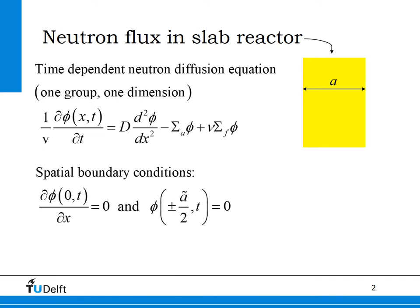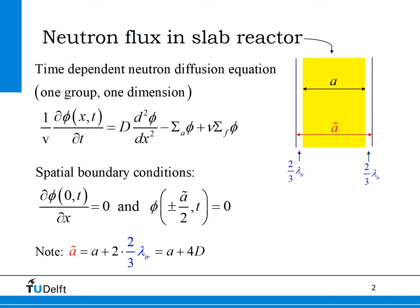To solve this equation we need boundary conditions. For a bare geometry, this is given in diffusion theory by putting the flux to zero at the linearly extrapolated boundary. Furthermore, because the composition is homogeneous, the flux needs to be symmetric around the center plane as well. The width of the slab is A, and the width of the extrapolated slab is A plus two times the linear extrapolation length, one for the left side and one for the right-hand side. The extrapolation length is two-thirds times the transport mean free path, or two times the diffusion coefficient of the core region.